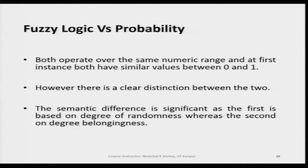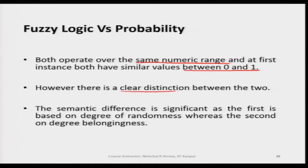Let us discuss fuzzy logic versus probability. Many often get confused because both operate over the same numeric range between 0 and 1. However, there is a clear semantic distinction: probability is based on the degree of randomness, whereas fuzzy logic is based on the degree of belongingness.